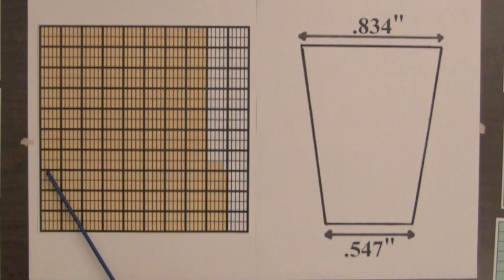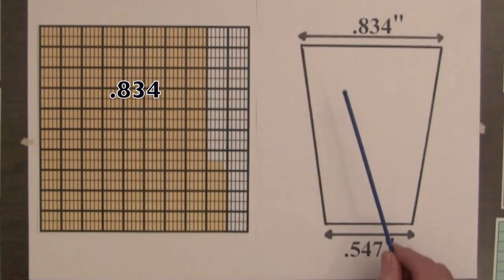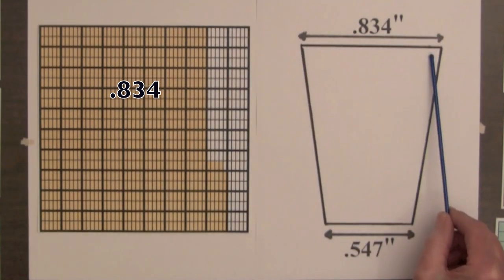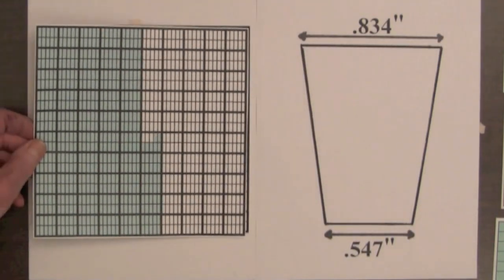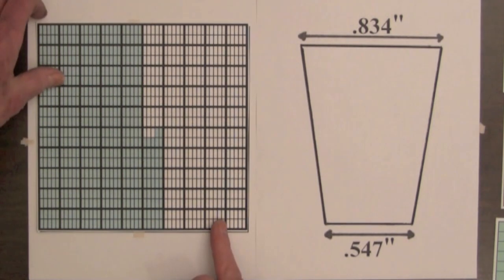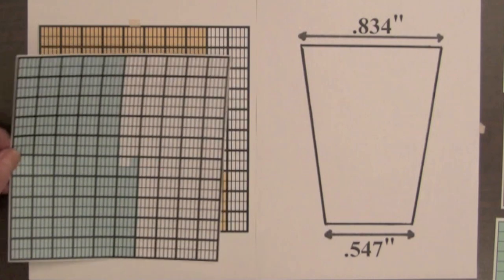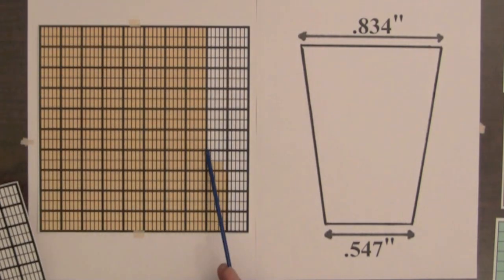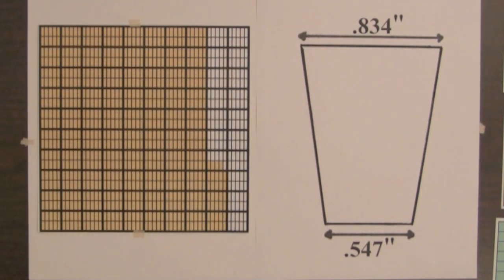This square with 834 shaded parts out of a thousand represents the decimal for the top diameter. And the decimal for this square is the bottom diameter, 547 shaded parts out of a thousand. To see the difference in the shaded amount of the blue square and the yellow square, we will use a transparency.